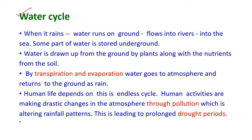The water cycle: when it rains, the water runs on the ground and then flows into the rivers and then into the sea. During this process, some part of the water is stored underground. The water is then drawn up from the ground by plants along with the nutrients from the soil.